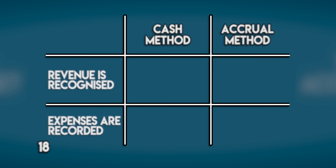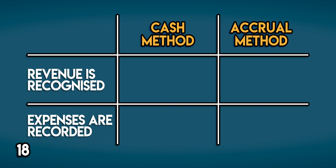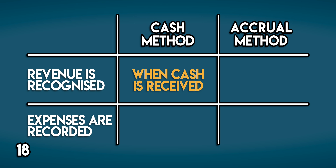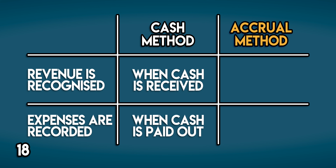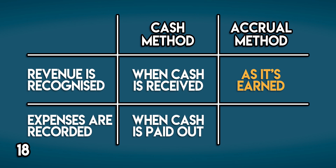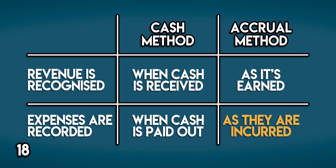The next thing you should know is the difference between the cash method and the accrual method of accounting. The cash method says that revenue is recognized when cash is received, and expenses are recorded when cash is paid out. It's nice and simple, but there is a major flaw: it can be extremely difficult to measure profit, because revenue and related expenses are often recorded in separate accounting periods. The solution is to use the accrual method, which says that revenue should be recognized as it's earned and expenses recorded as they are incurred — not when cash changes hands.